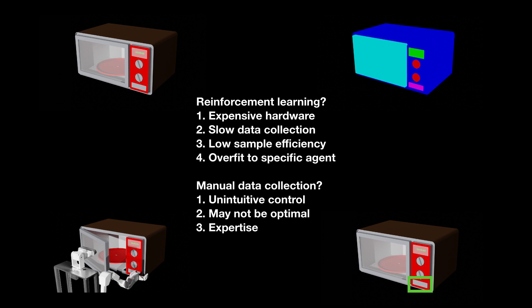So how about manually collecting robot interaction data? Well, manual control of the robot is actually not intuitive, and humans may not be able to optimally control the robot. Also, human operators need to be trained in order to operate the robots correctly. So collecting interaction data is actually much harder compared to collecting visual data.